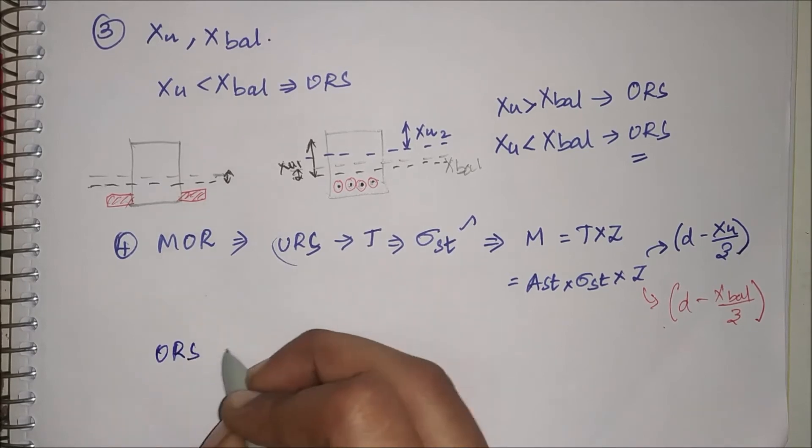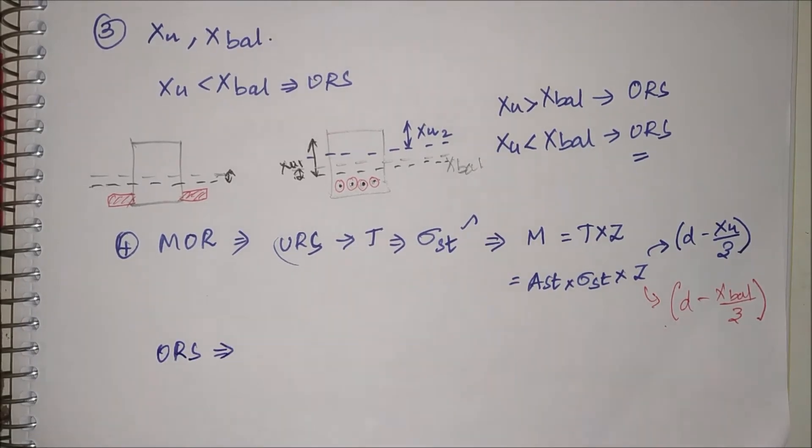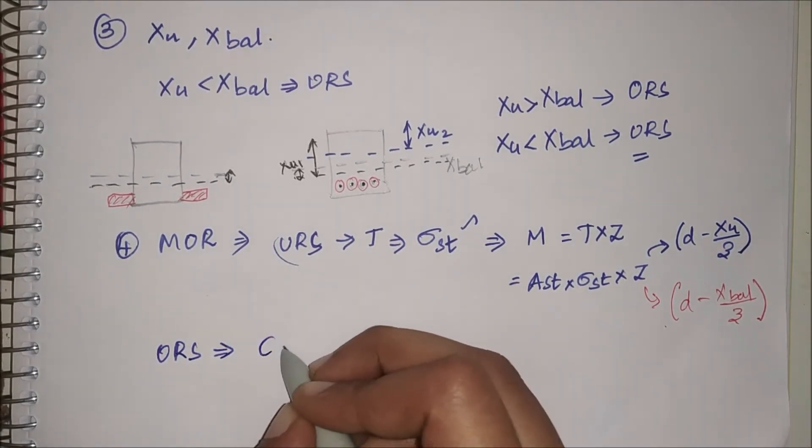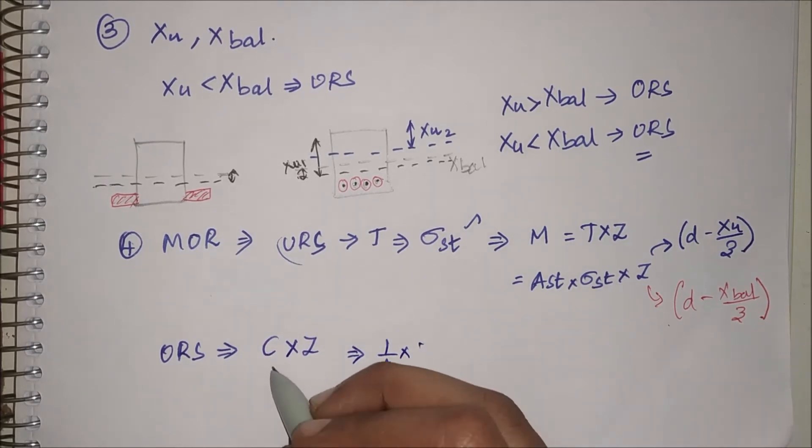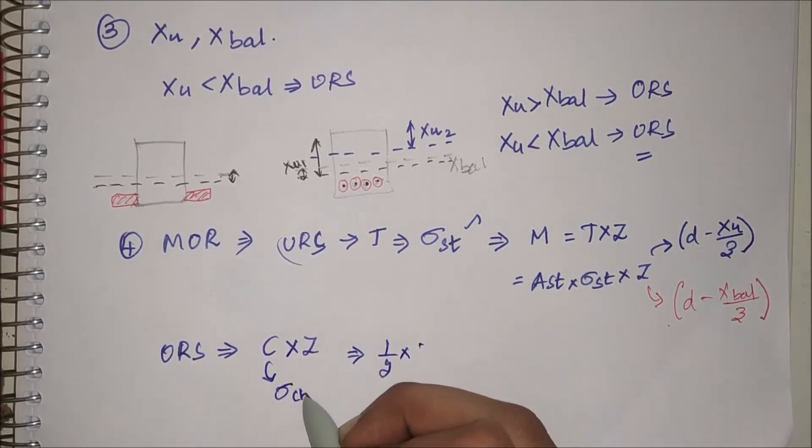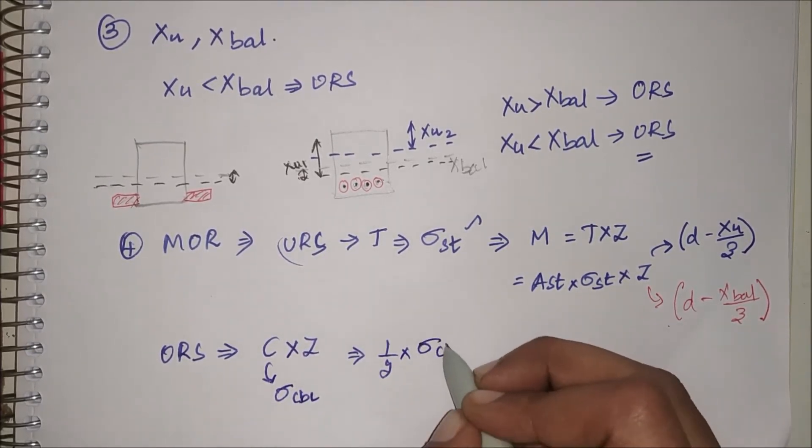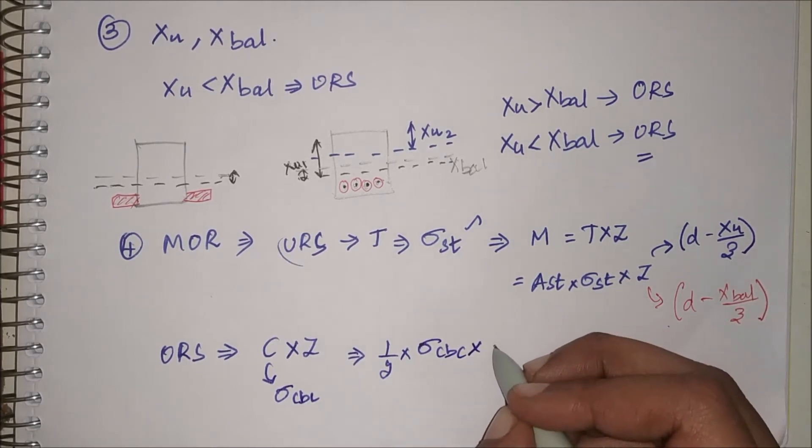Over reinforced section: in over reinforced section, concrete fails first. So moment of resistance is given by C into Z, which will be half times—C fails, so I will know the value of sigma CBC. Half times sigma CBC into b into Xu.